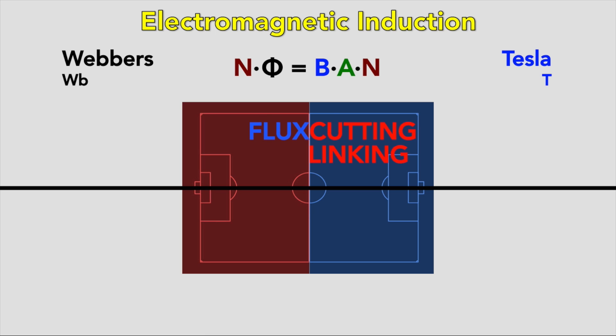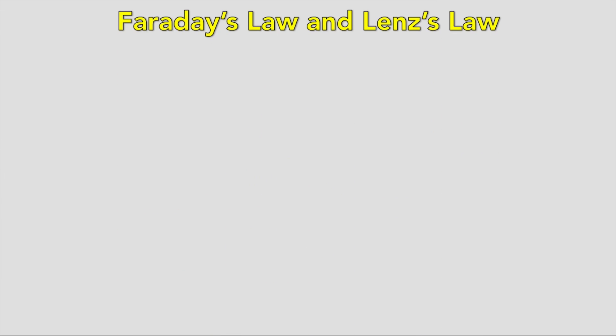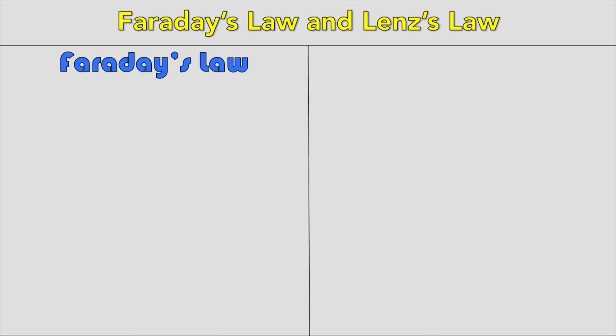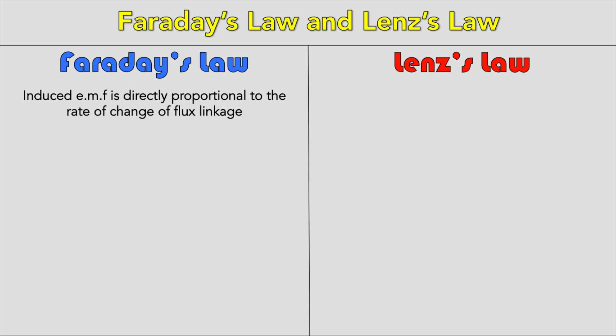When the wire coil is not normal to the direction of B, you can use the amended equations Φ = BA cos θ, or NΦ = BAN cos θ, where θ is the angle between the normal to the plane of the coil and the magnetic field in degrees. Faraday's law states that the induced EMF is directly proportional to the rate of change of flux linkage, and gives the magnitude of the induced EMF as the rate of change of flux linkage.